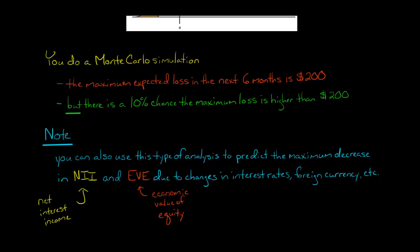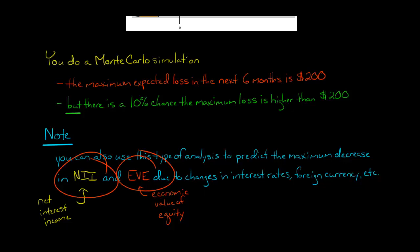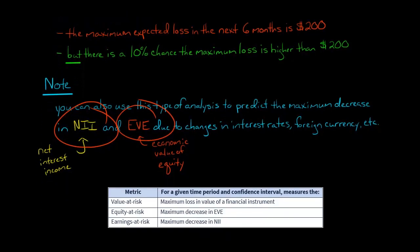Note the following: You can also use this type of analysis to predict the maximum decrease in the bank's net interest income, or the bank's economic value of its equity, the value of the firm. When we look at the maximum loss in the value of a financial instrument, we call it VAR, value at risk.